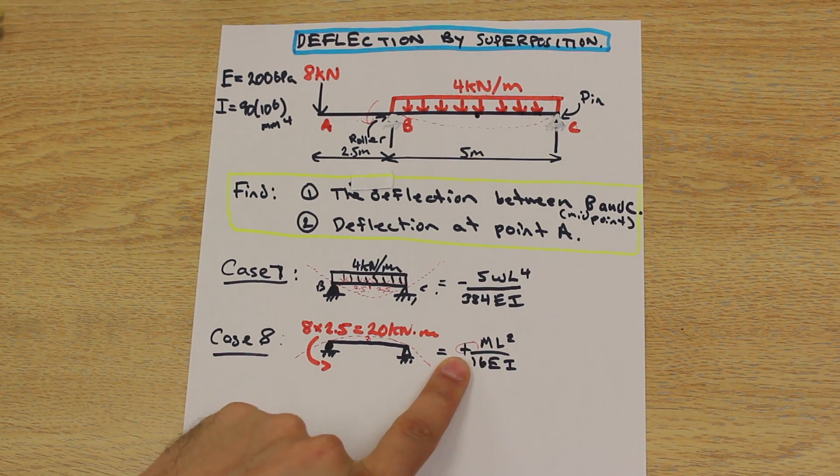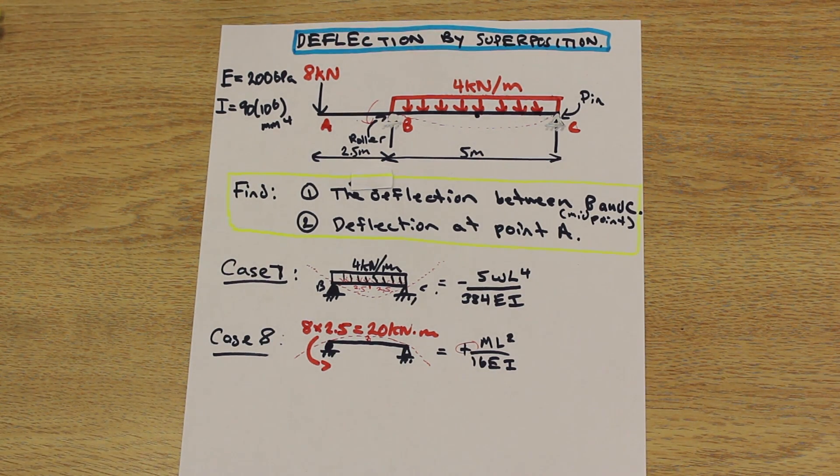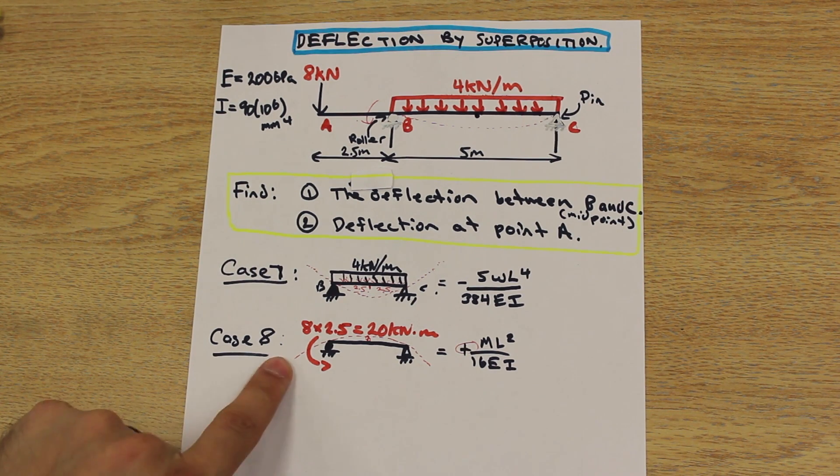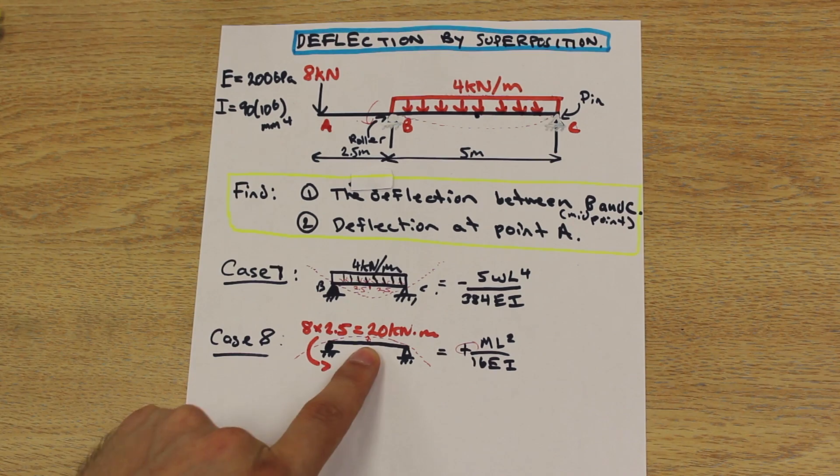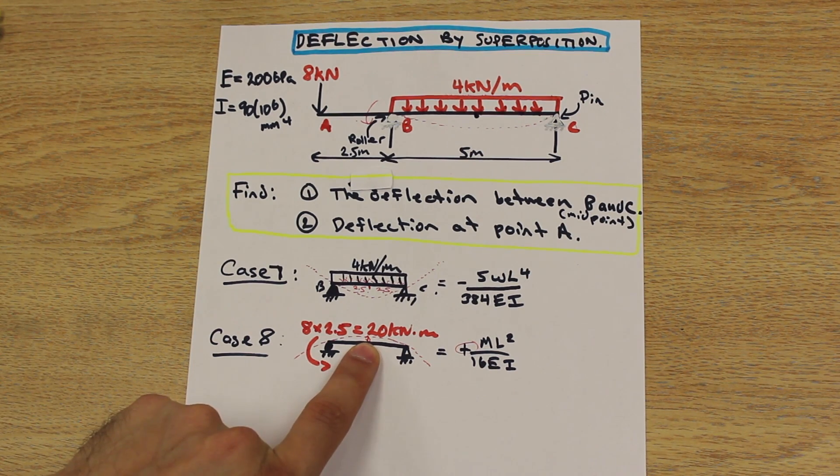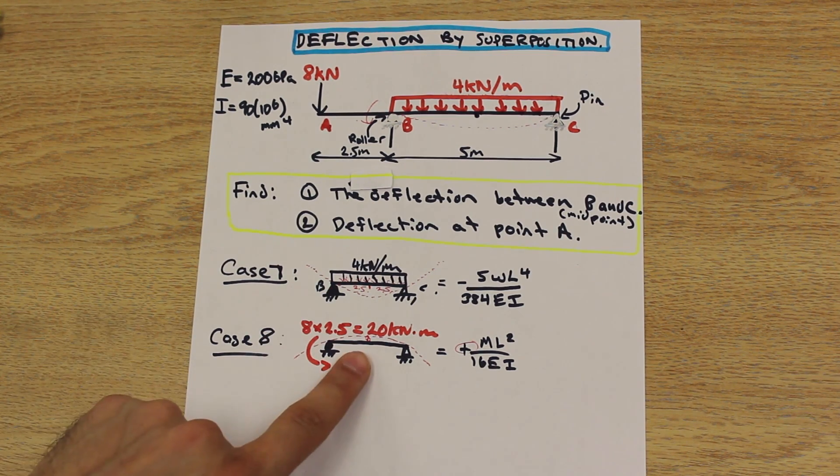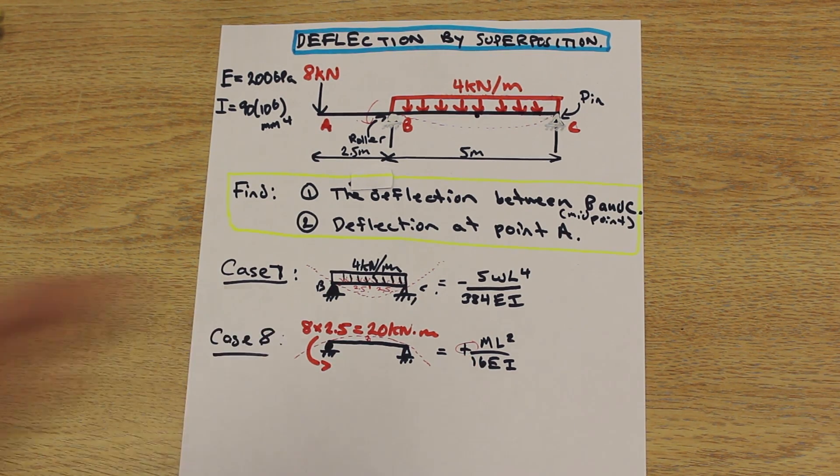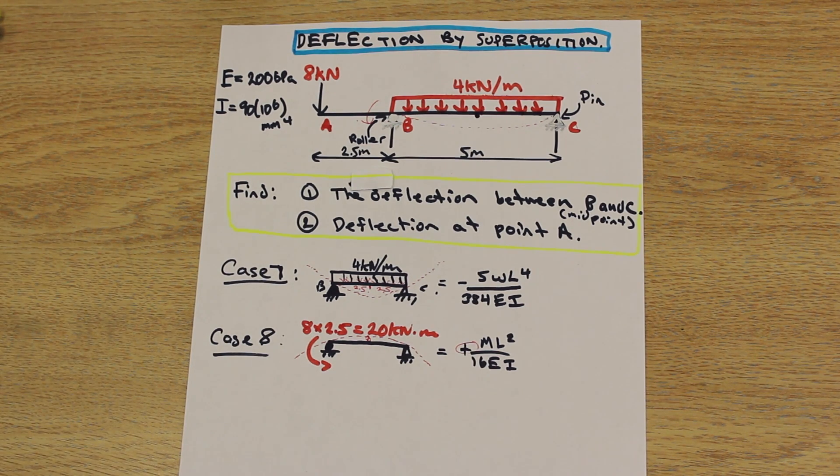So don't look at the sign in the table. Just draw your case, draw your elastic curve, and then look at the point of concern and see where the deflection is going. Is it deflecting up or is it deflecting down? So in this one, it was deflecting down. This one, it's deflecting up. So we just assign the sign based on our drawing, not on the table. Because that's the main place that you're going to make a mistake.